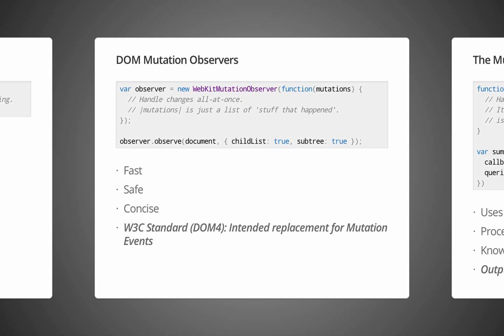The W3C public web apps working group has worked on a replacement called DOM mutation observers. Mutation observers are aimed at the same use case of wanting to know when things happened to the page and what happened, but they're designed in a way that hopefully addresses those original failings of mutation events. They're fast, they're safe, and they're much more concise.